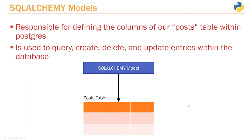The other model is the SQLAlchemy model, which is the one we've been working on over the past couple of lectures. These are responsible for defining the columns of our posts table within Postgres. It defines all the different attributes within a specific table. We use that Post model to perform queries to our database — to create, delete, and update entries. But this model is fundamentally different from the Pydantic model, which is why I created this video: to make sure you understood the differences and why we need both.